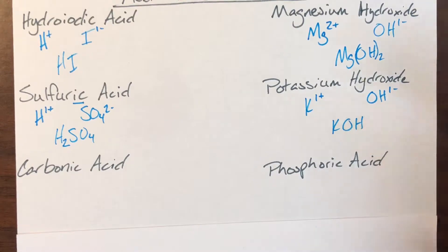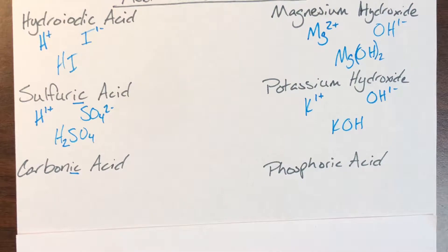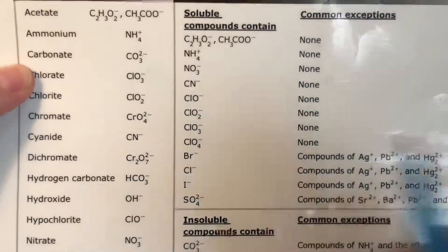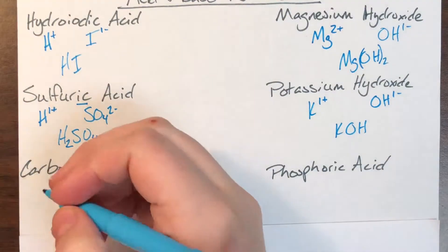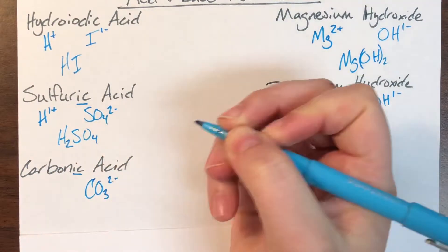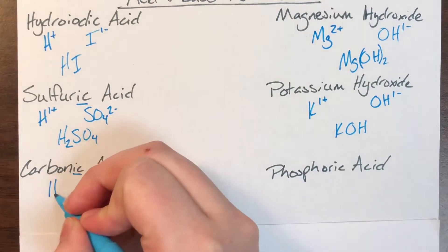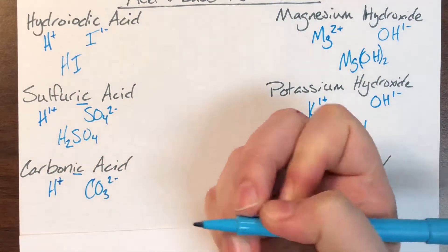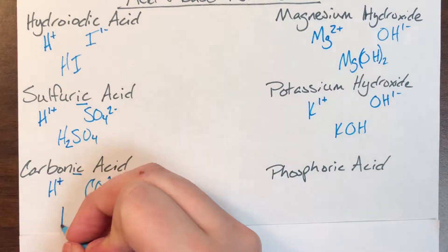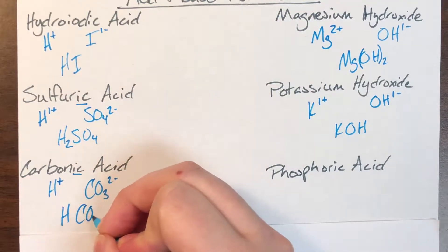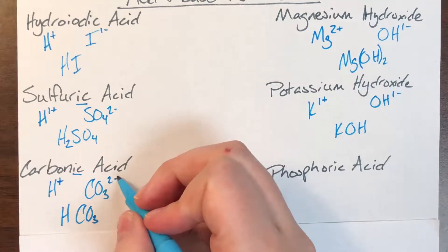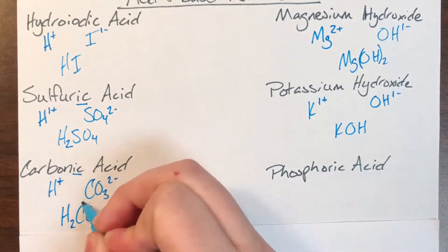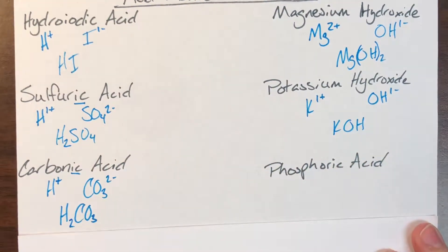Next is carbonic acid. The '-ic' ending means I am looking for the '-ate' form of the polyatomic ion with carbon in it, which is carbonate: CO₃²⁻. 'Acid' tells me I'm going to be leading with hydrogen, which always has a charge of plus one. Writing them together: hydrogen's one becomes carbonate's one — don't need to write it — and carbonate's two becomes hydrogen's two. So H₂CO₃ is carbonic acid.